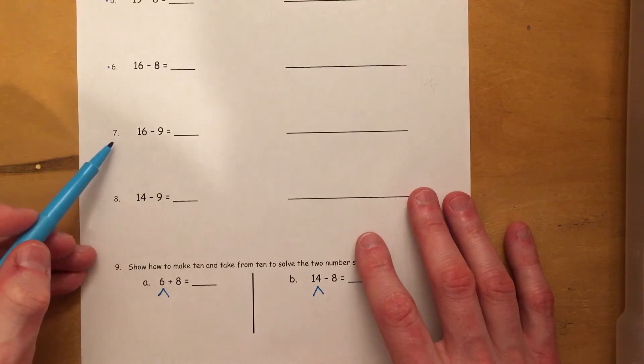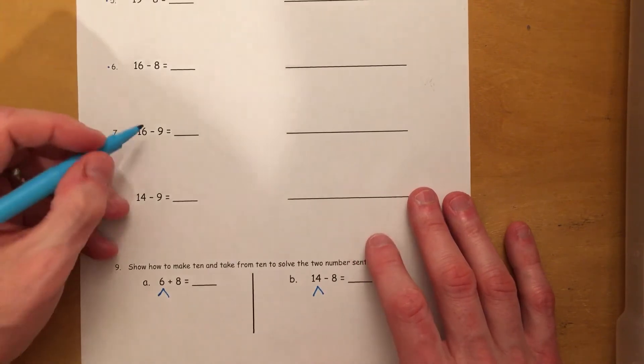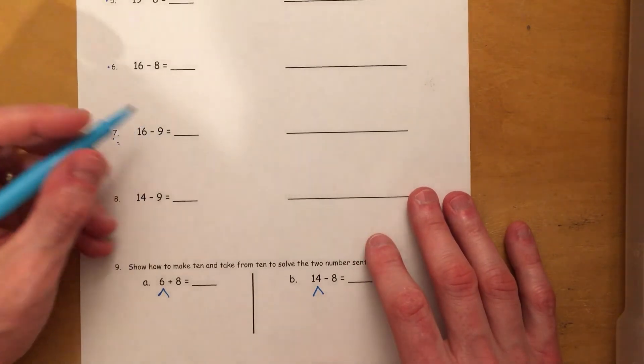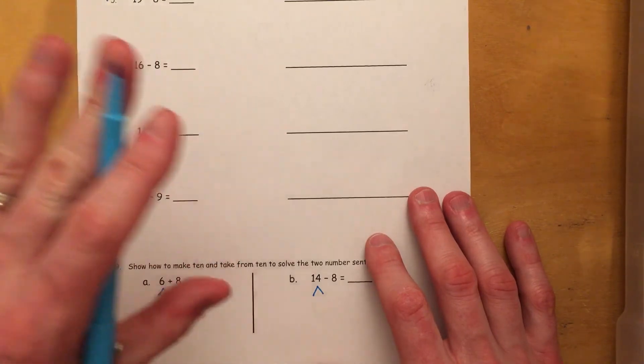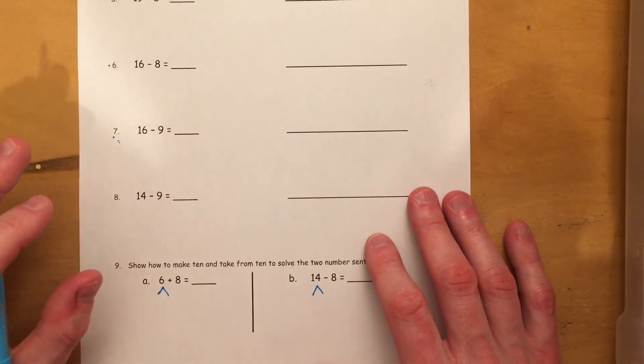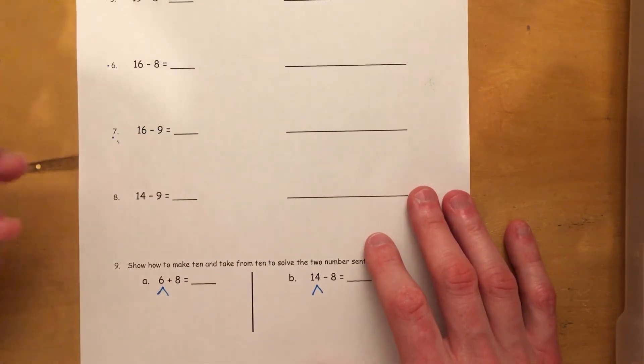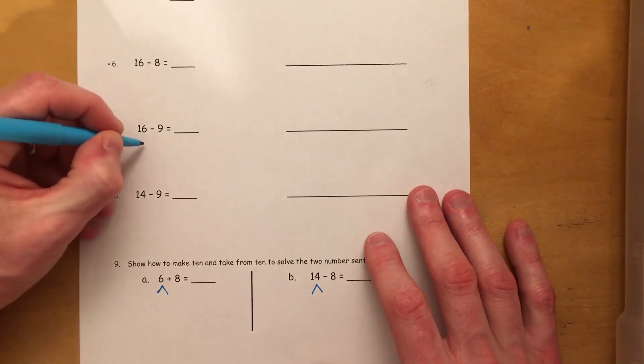All right, moving on to number 7. We have 16 minus 9. So this is going to be pretty much the same thing that we've been doing, except it's subtracting 1 more. So we're going to go ahead and draw this out.